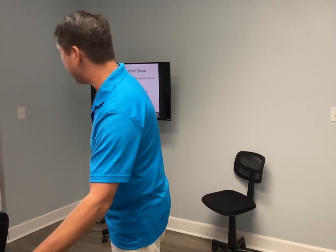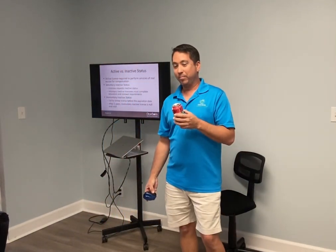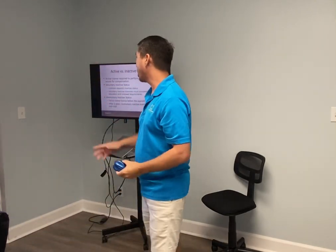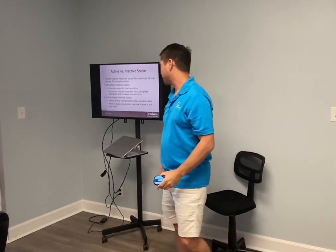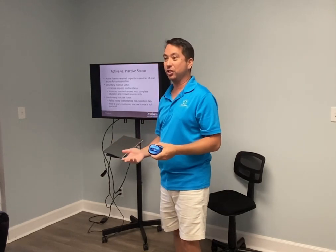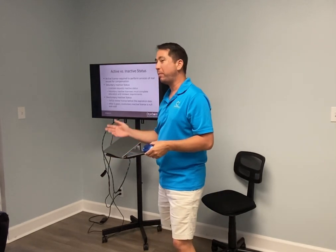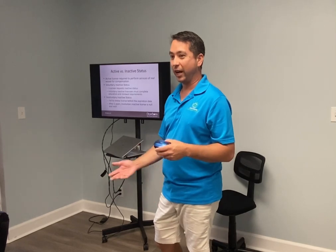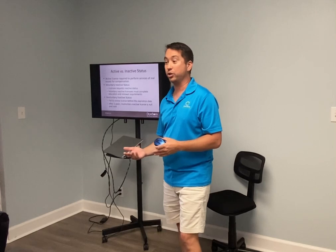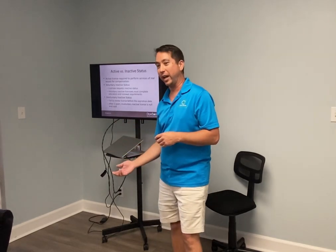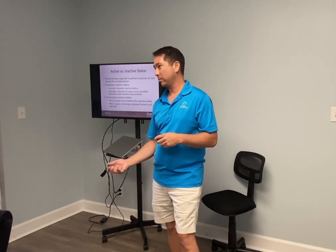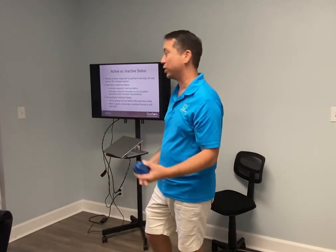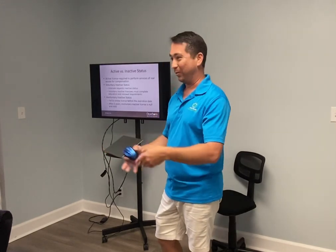License status — how many statuses are there? We talk about three in class but there are actually four. The first status is active. When you initially get your license and pass your test, are you active or inactive? You're inactive. And is that voluntary or involuntarily inactive? It's voluntary — you have the choice to go activate your license by joining a brokerage.